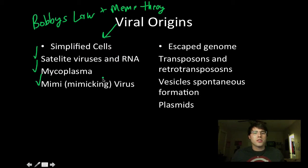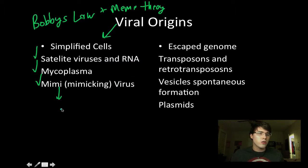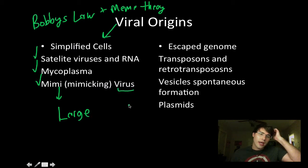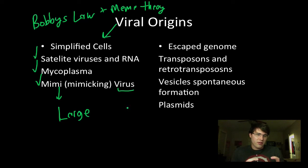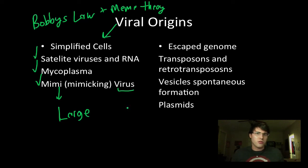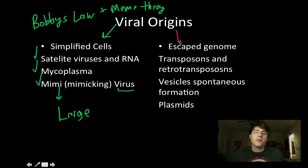Another example is the mimivirus, which applies to both the simplified cell and to possibly the escaped genome hypothesis. This is a very large virus that looks like it was once a cell — if you take some stuff out and leave it as just a membrane with a genome inside, that's what you would have. Now another hypothesis as to where viruses came from is the escaped genome hypothesis.